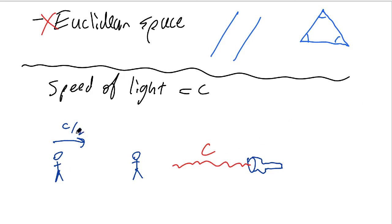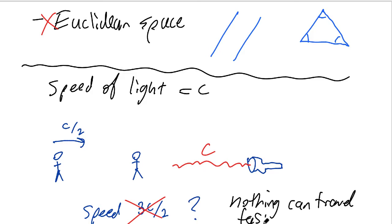According to Newtonian mechanics, this observer should see the light coming towards him or her with speed three halves the speed of light. But this isn't correct. Nothing can travel faster than C. So this observer also sees the light coming towards him or her with speed C.